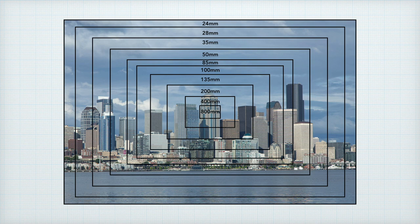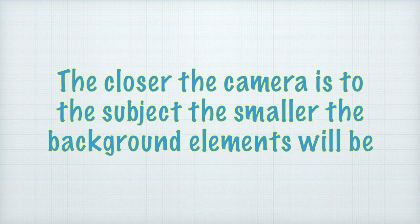Switching to a longer lens is basically a pre-production cropping in camera as opposed to cropping in on an existing photo during post-production. The sizes of objects in the scene scale equally and maintain the same relationship to each other. If you move the camera in closer, the objects closer to the camera will get larger much faster than objects behind them, changing their size relationship or perspective.